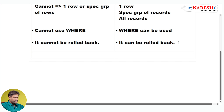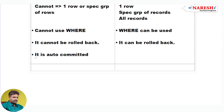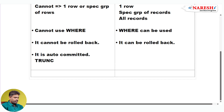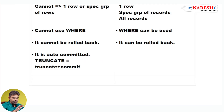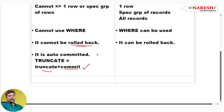Why? Because TRUNCATE is an auto-commit command. When we use the TRUNCATE command, the TRUNCATE command plus a COMMIT command will be executed automatically. After a COMMIT, can we use a ROLLBACK? No. That is why we cannot rollback a TRUNCATE action. But after DELETE, we can use ROLLBACK, because DELETE is not an auto-commit command.